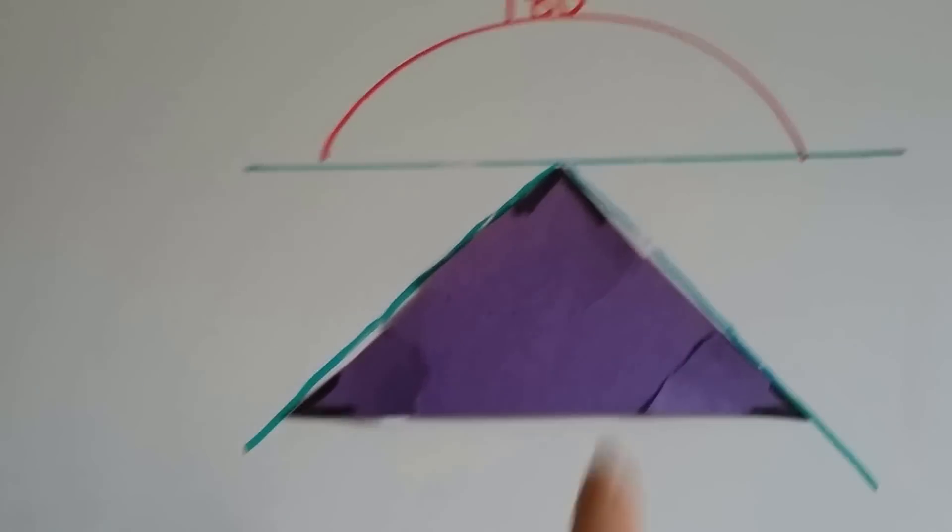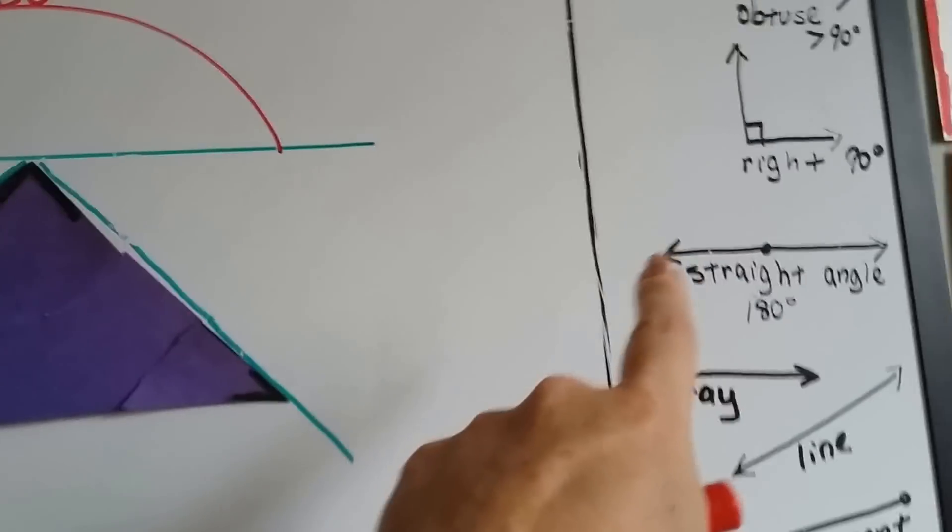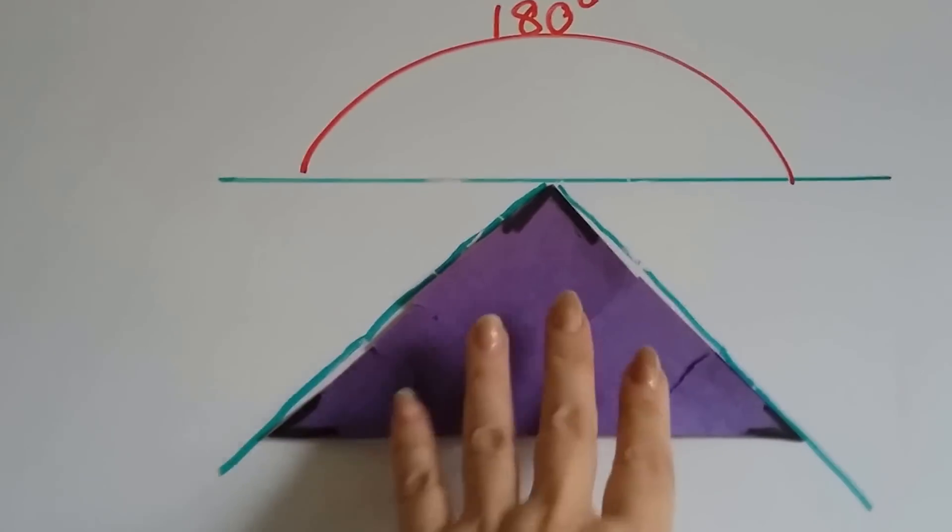Now I'm going to show you one more thing. I've got this triangle over here. We know a straight line is 180 degrees. See? It's considered a straight angle. See that?